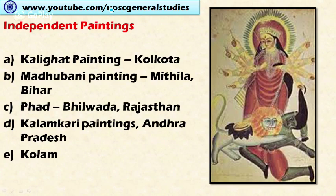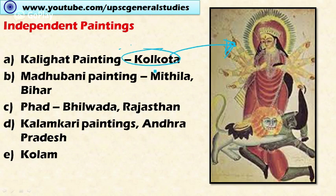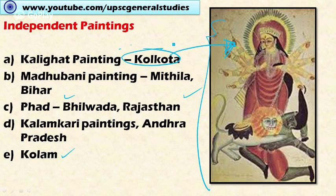Apart from regional schools, there are independent schools of painting in India, not associated with any particular region, religion, or ruling class. These include Kalighat painting in Kolkata, which was prominent during the British period and depicted Hindu goddesses, gods, and day-to-day socio-economic situations. Other independent schools are Madhubani painting in Mithila, Bihar; Phad painting in Bhilwara, Rajasthan; Kalamkari painting in Andhra Pradesh; and Kolam.